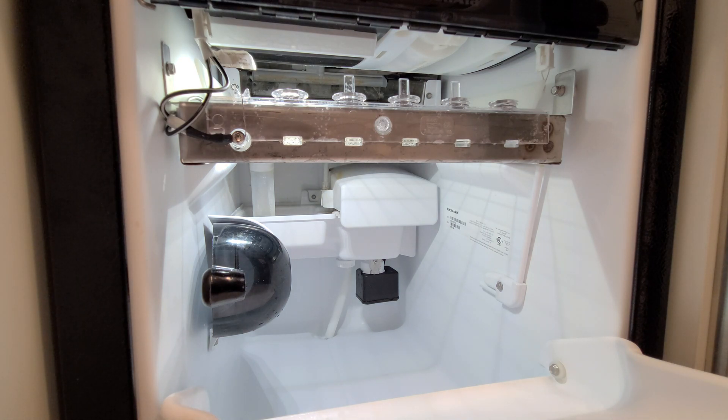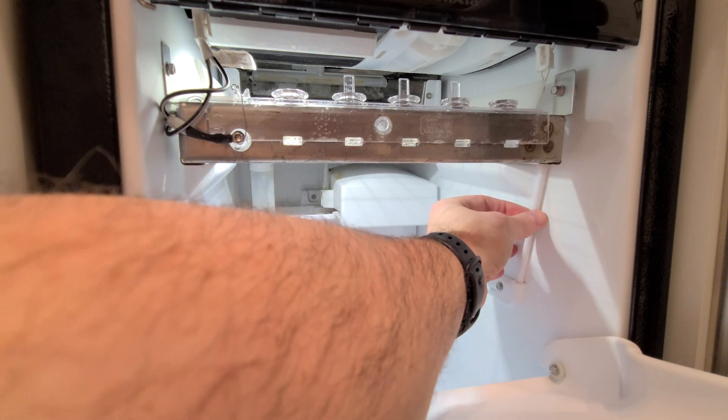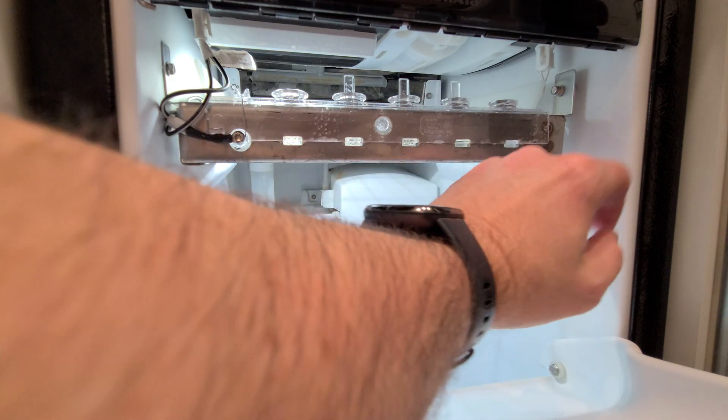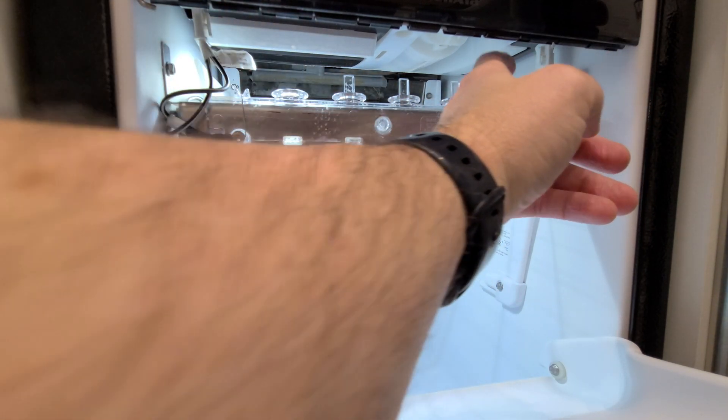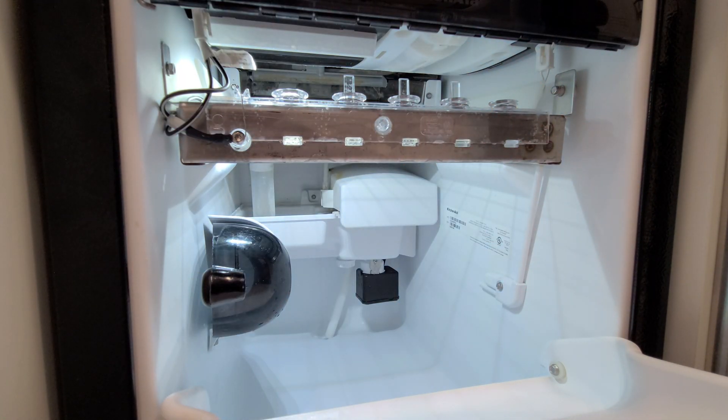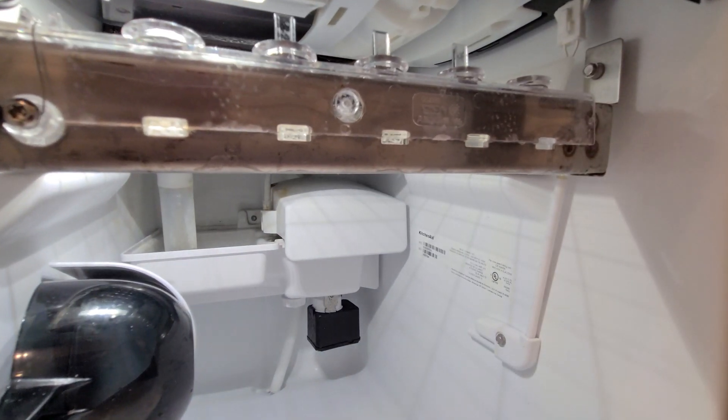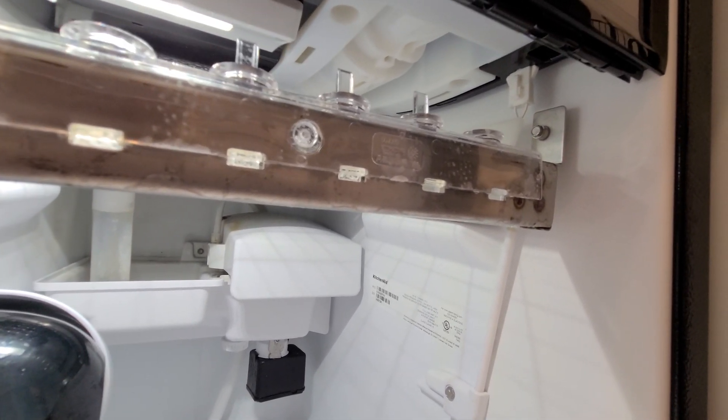Now with the top off, we can see where the thermistor, so this is the thermistor here. The wiring goes back behind this bracket. And let's see if we can get a little closer up in there.